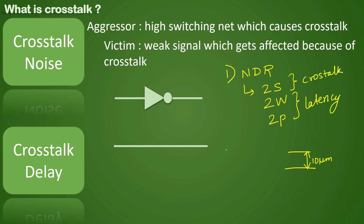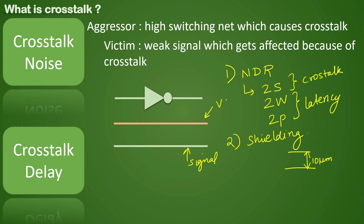Another method is shielding. If a signal is very strong, shielding is applied wherever the aggressor is routed so it does not affect normal signals. The shield is generally a ground signal placed between the normal signal and the clock signal. Shielding can be used for prevention, and if NDR was already applied but crosstalk still occurs and there is space available, shielding can also be used for fixing.